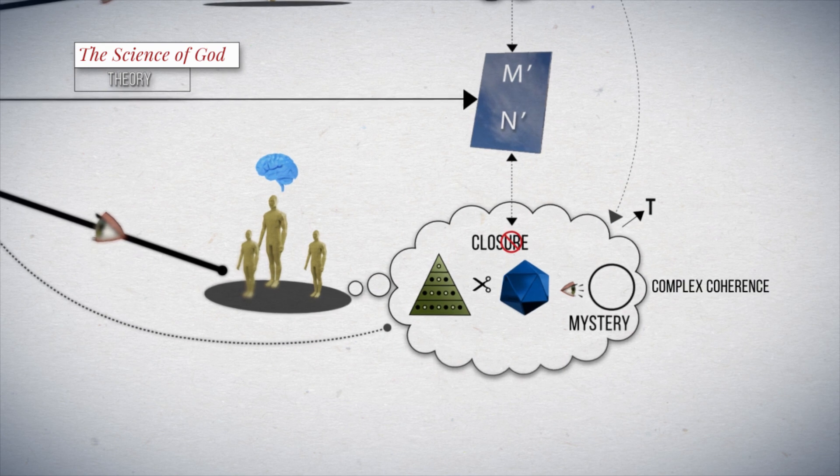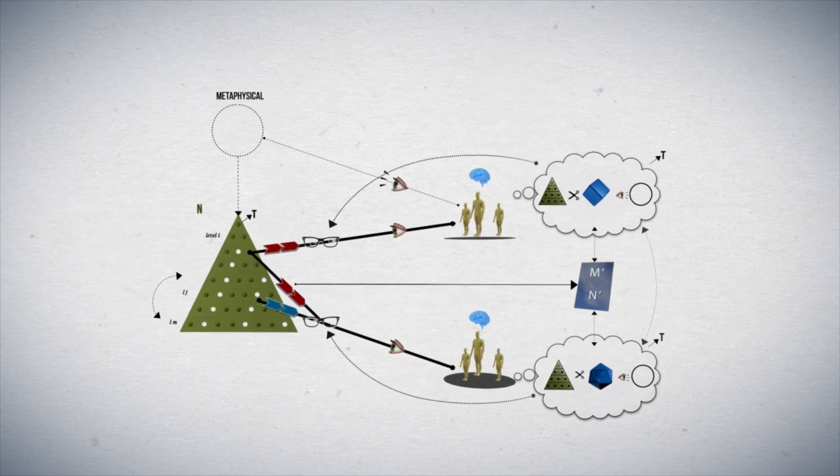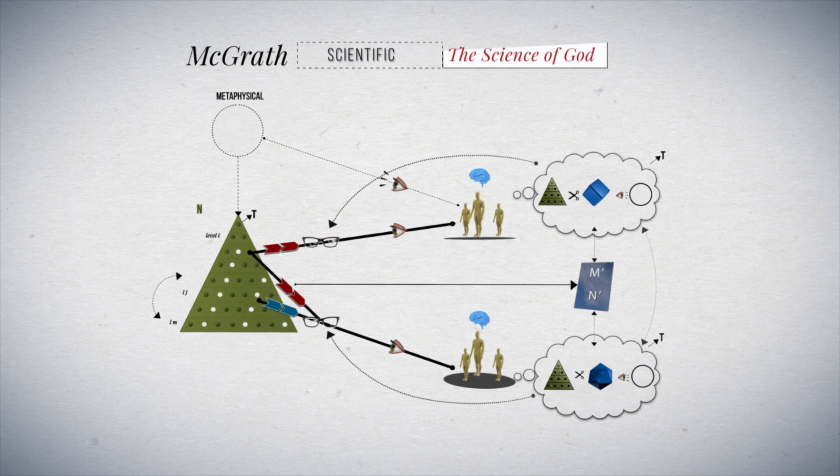This is a graphic model of what McGrath seems to understand by scientific in the book The Science of God.